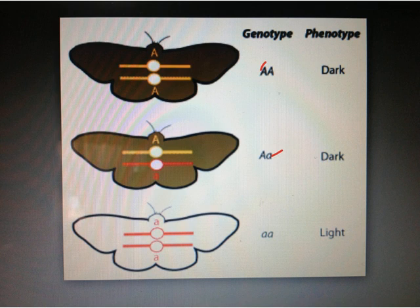The phenotype consists of the actual observable character based on the allele composition of the gene. In this case, it is the color — either dark or light — which are the actual characters for color as a trait.